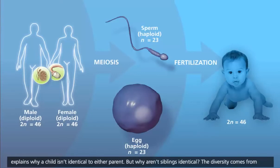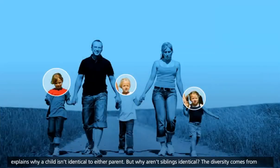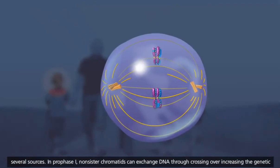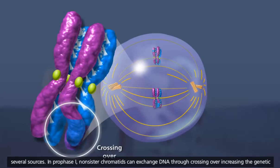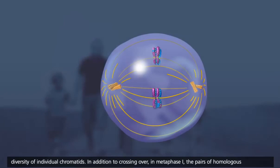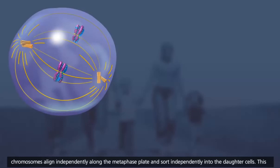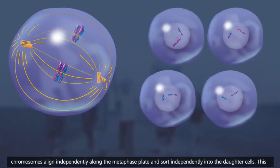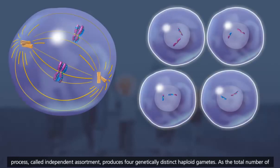This explains why a child isn't identical to either parent. But why aren't siblings identical? The diversity comes from several sources. In prophase I, non-sister chromatids can exchange DNA through crossing over, increasing the genetic diversity of individual chromatids. In addition, in metaphase I, the pairs of homologous chromosomes align independently along the metaphase plate and sort independently into the daughter cells. This process, called independent assortment, produces four genetically distinct haploid gametes.